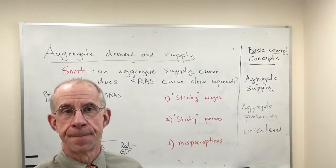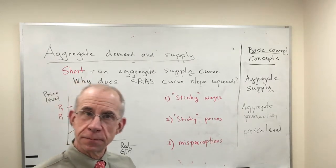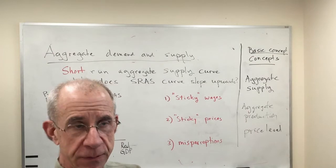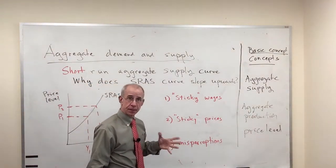Three major stories about why this might occur, and different macroeconomists subscribe to one or more of these. So they're distinct, but they're related.